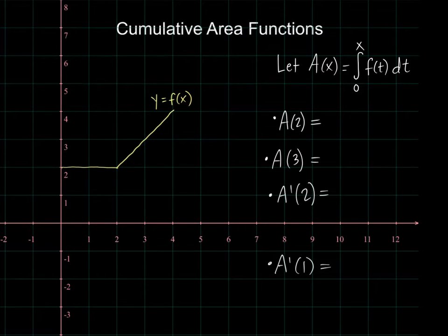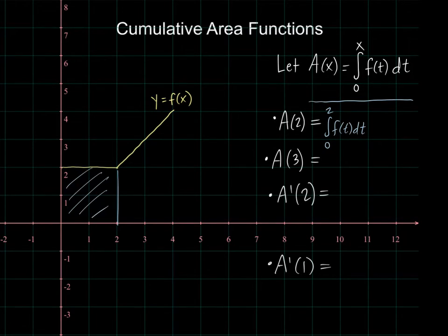So here's a function, and I'm going to define A as a cumulative area function. A is defined as how much area I have accumulated from zero to x. So A of two is how much area I have accumulated from zero to two under the function. And don't worry about t and x being different variables. It all means the same thing. It still means area under this graph. The integral from zero to two is just how much area I have accumulated, and it's this two by two box. So A of two equals four.